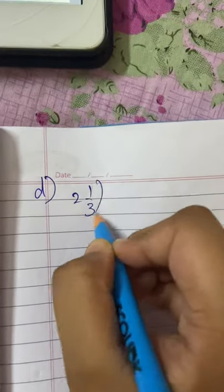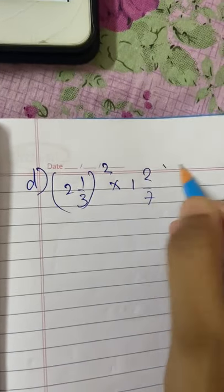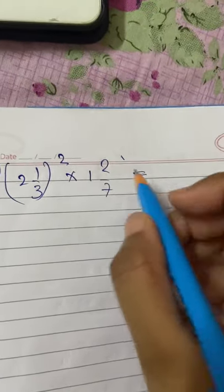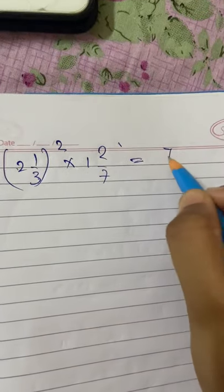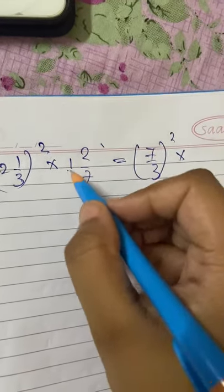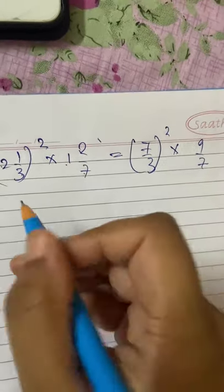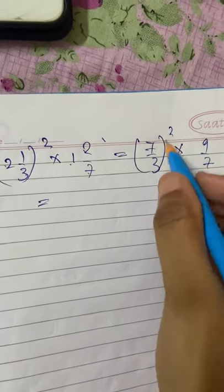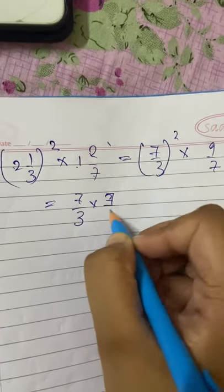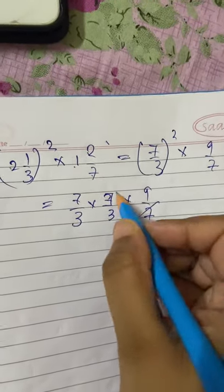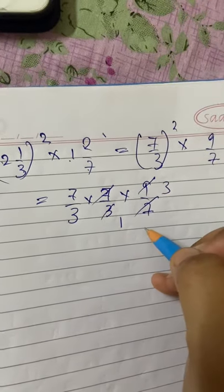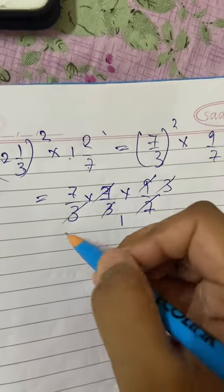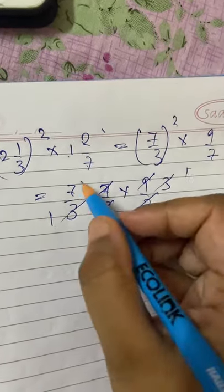Another question, sub-question D: (2 and 1/3)² into 1 and 2/7. Convert to improper fractions: 2 into 3 = 6, plus 1 = 7/3, so we have (7/3)². And 1 and 2/7: 1 into 7 = 7, plus 2 = 9/7. For the square, write 7/3 two times: 7/3 into 7/3 into 9/7. The 7s cancel. Then 3 nines: 9 divided by 3 gives 1 and 3. That 3 is also divisible, so what remains is just 7 in the numerator.